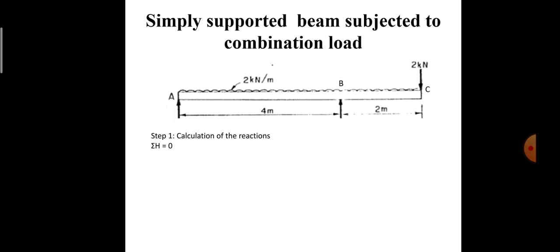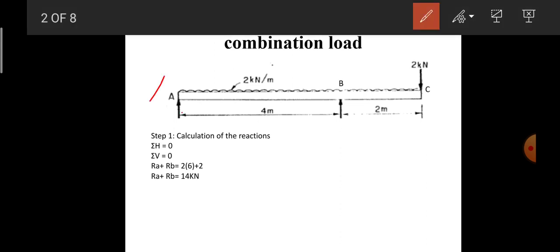We apply the equilibrium conditions. The first condition is that the summation of all horizontal forces equals zero. Since there are no horizontal forces on the beam, this condition is automatically satisfied. The second condition is that the summation of all vertical forces equals zero. We take upward forces as positive and downward forces as negative, so R_A and R_B, acting upward, are positive.